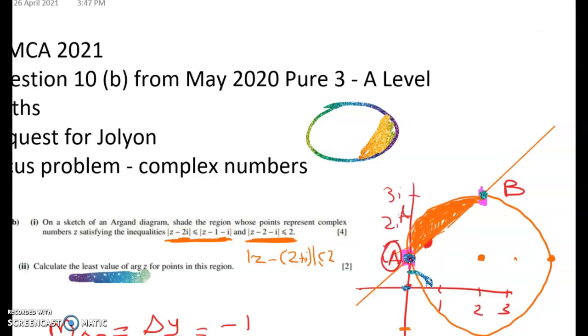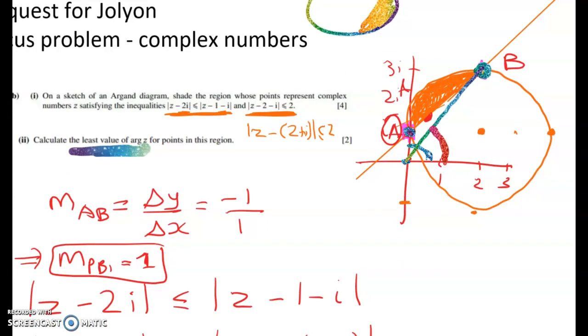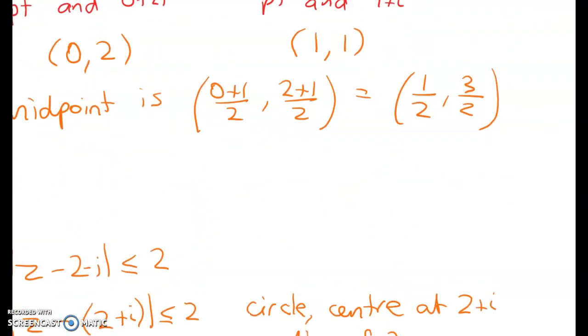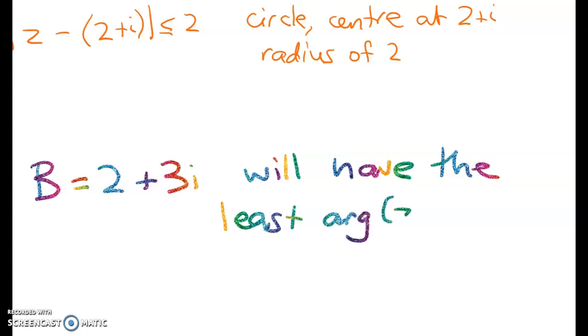So the point that I'm after is the coordinates there and then I need to find the argument of that point B. Now, we've drawn it well enough that we can see that point B is at the top of the circle and that's satisfying it's on the perpendicular bisector line and it's up here. So point B has coordinates of 2 plus 3i. And from there it's pretty easy to find the argument. So it will have the least arg z of the points in the locus.